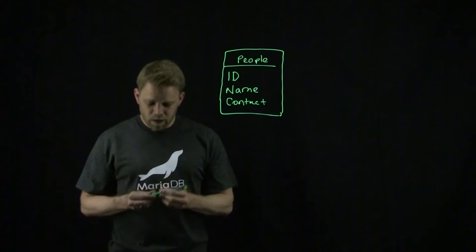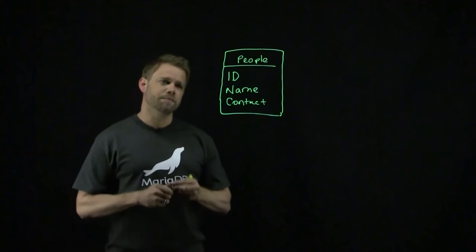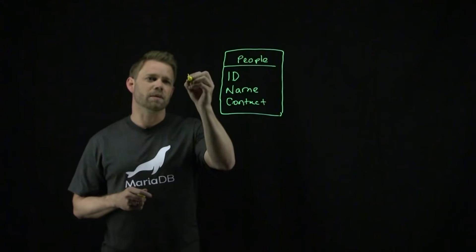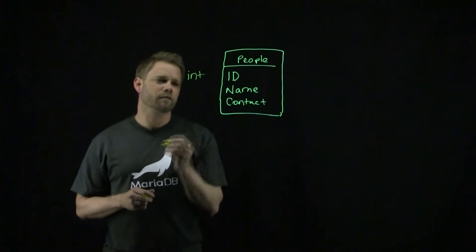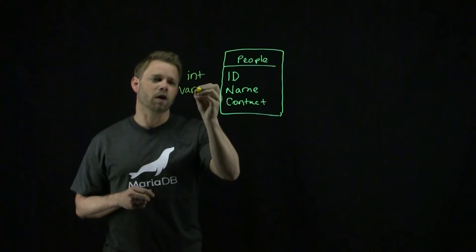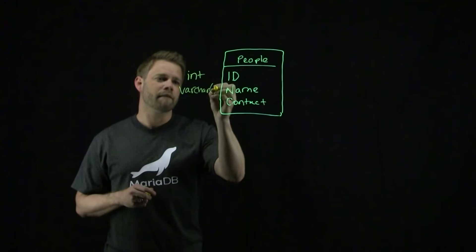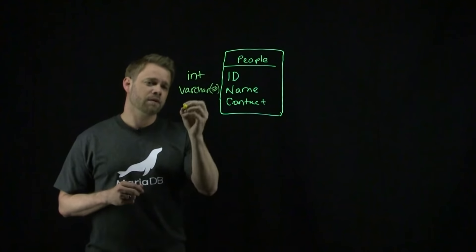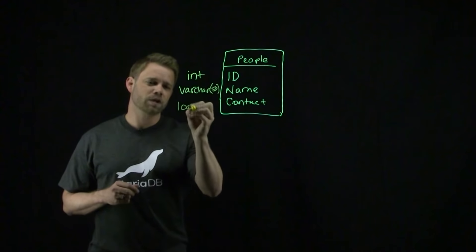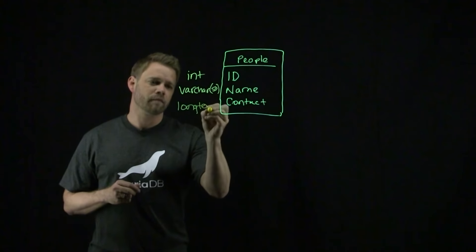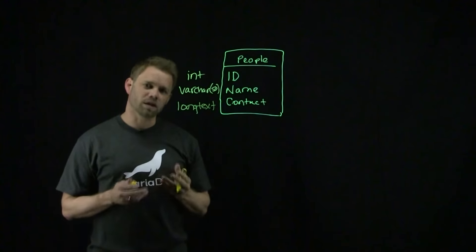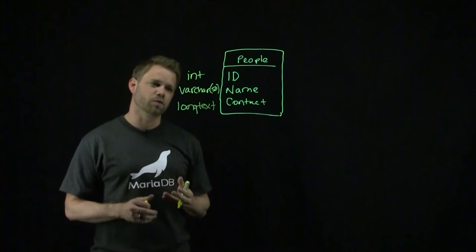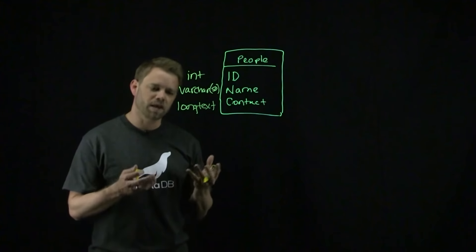The data types in this table are going to be integer for the ID, varchar(50) for the name, and then I'm actually going to use an existing data type called long text. We're simply going to be storing text inside of this table 'people'.